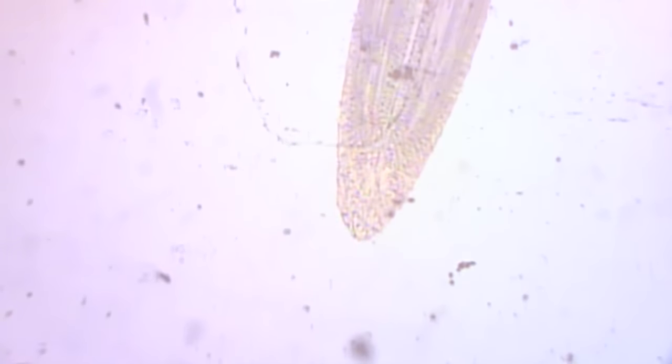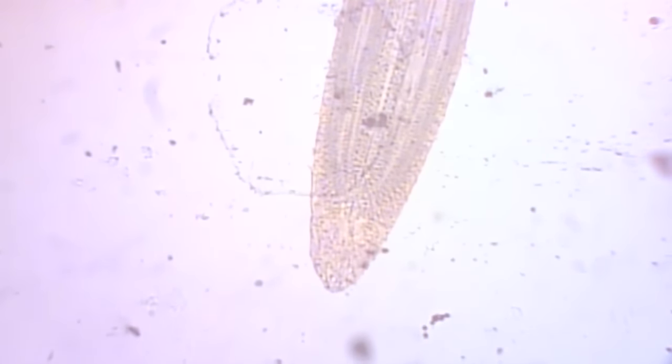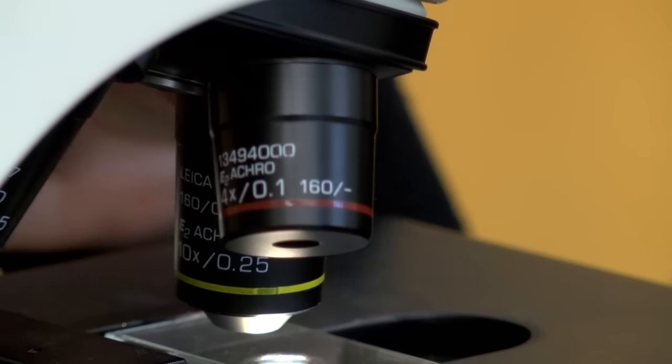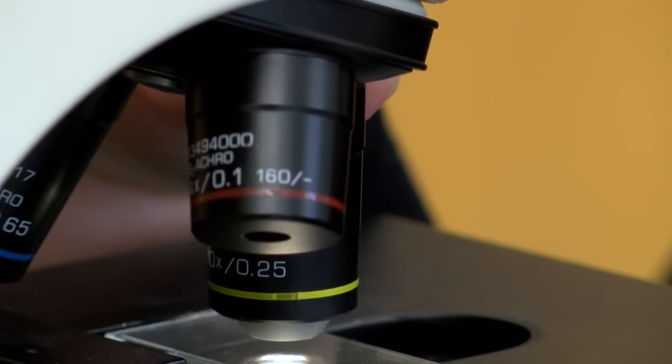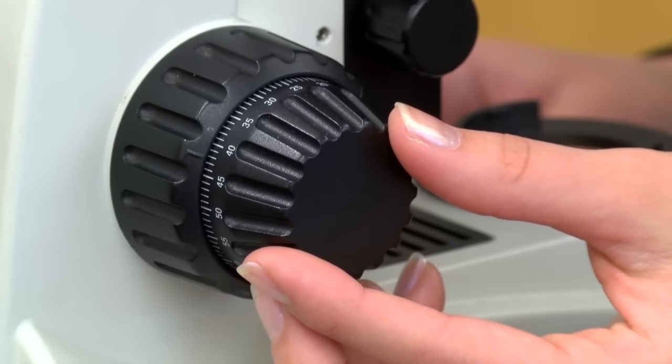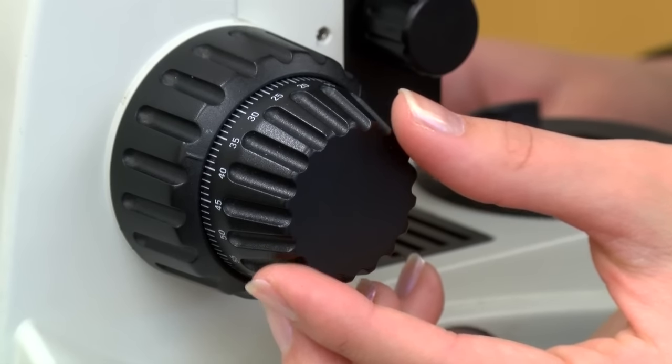Once you have found the specimen on low power, be sure it is centered in the field of view. Then move to the next highest objective lens, 10X, and refocus. Your specimen should be nearly in focus and you should only need to use the smaller, fine focus knob.